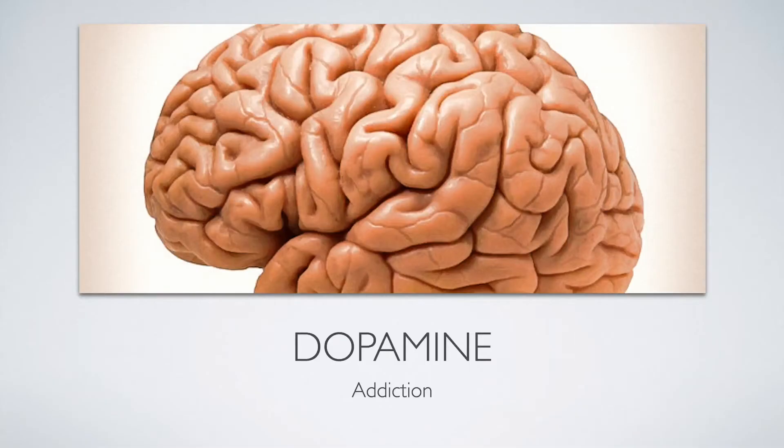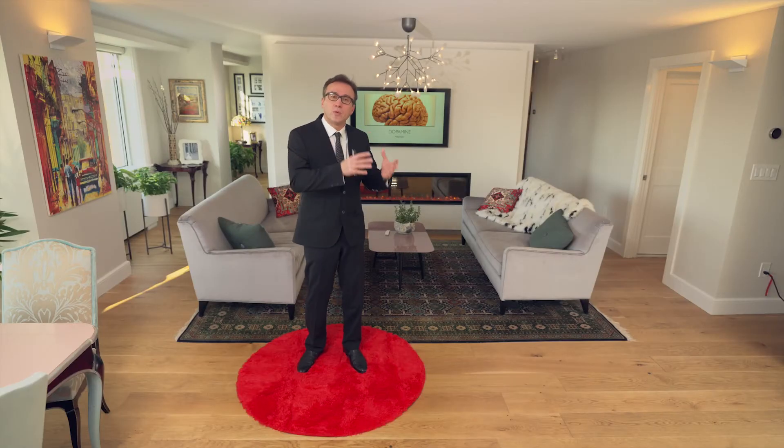Why does sugar have such a powerful effect on us? Our ancestors in the savannah evolved, from an evolutionary biology perspective, a module in the brain that drove them to seek sweetness — the dopamine reward center. This was adaptive during times of scarcity. But once we moved to a time of abundance, we could not control our sweet tooth, and all kinds of problems resulted.